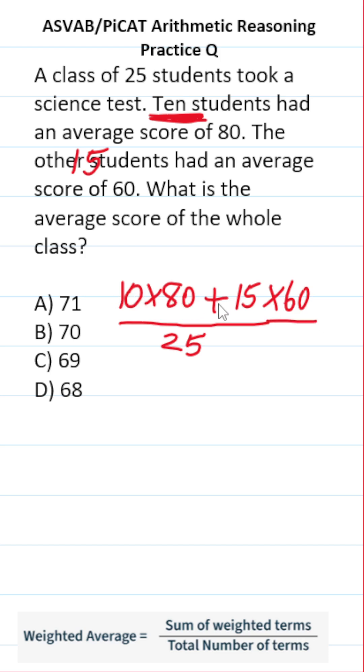So by doing 10 times 80 plus 15 times 60, we'll have the sum of the weighted terms. In case it's helpful, you may want to do this math off to the side so as not to make a mistake. On test day, you will not have a calculator, but you will have scratch paper.